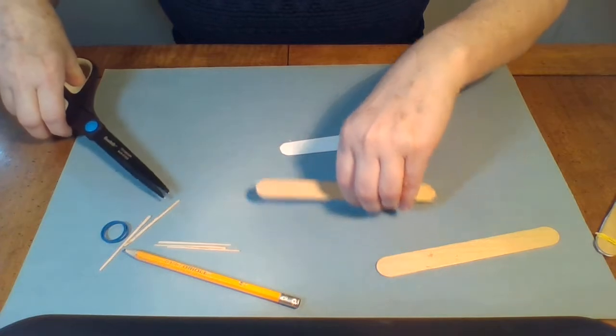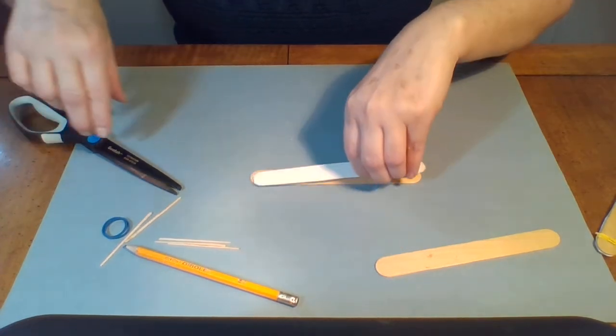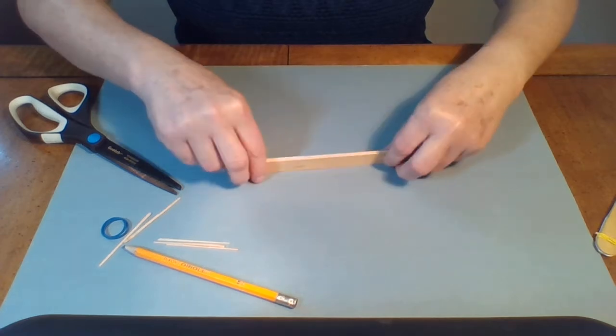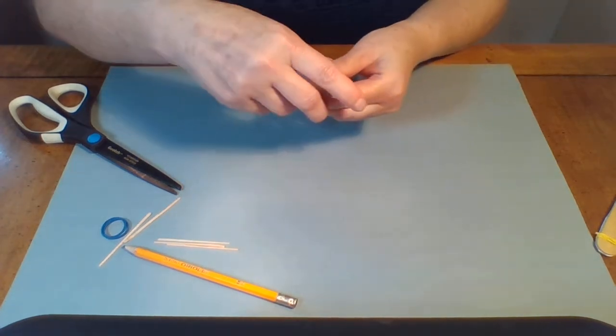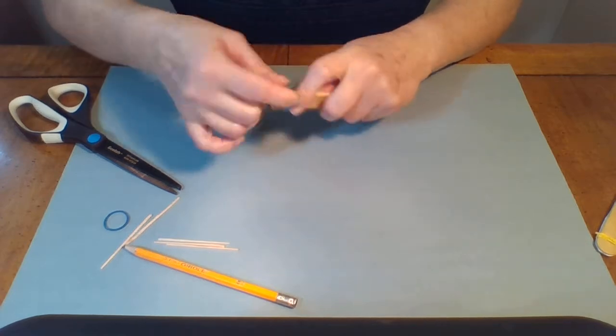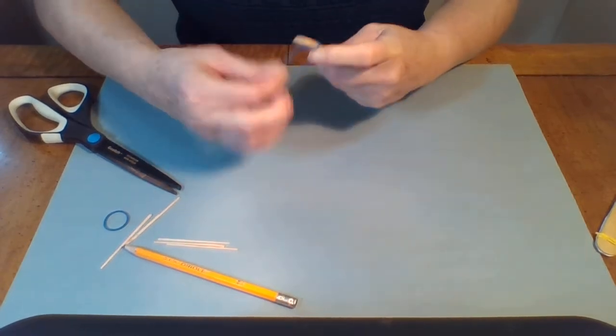Okay, so you're gonna have your popsicle stick. You're gonna place your paper in the middle and put your other popsicle stick on top. Your next step is to wrap a rubber band around the end of the popsicle stick.